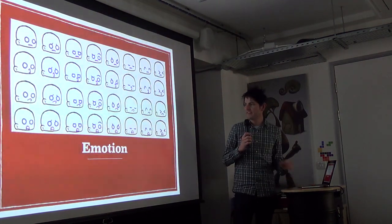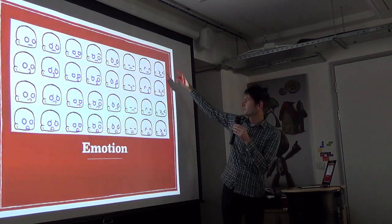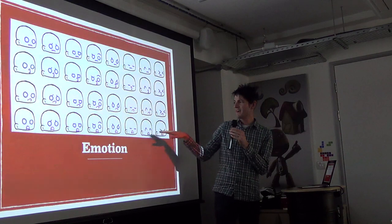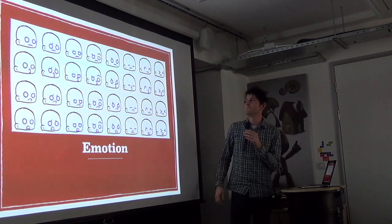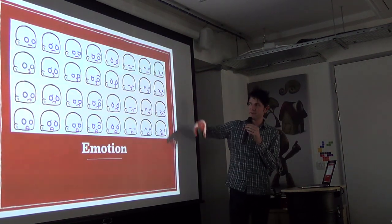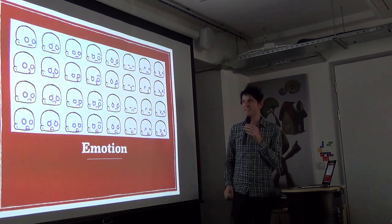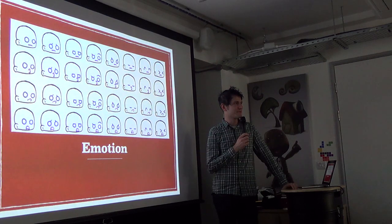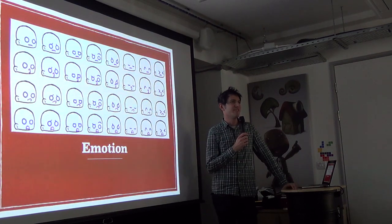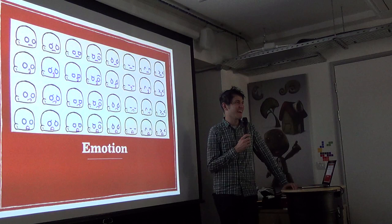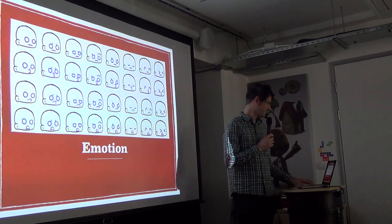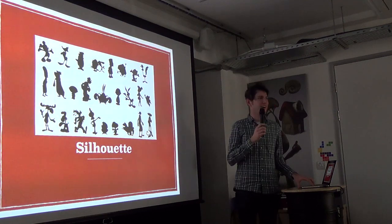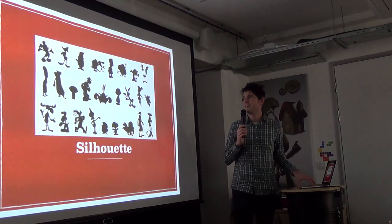Emotion: you can draw a grid of different eyes one way and different mouths another way, and create so many different expressions. People don't do enough with expressions — that's one of the problems with the Uncanny Valley, how flat and dead characters seem in games. Silhouettes: characters should have a unique silhouette that helps you read them and know who they are.